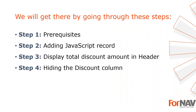To demonstrate how to calculate and use totals in Business Central reports, I am going to use these steps. Step one: prerequisites — what do I need to get going. Step two: we will add a JavaScript record to keep track of the discounted amount. Step three: we are going to display the sum value in the document header. Step four: we will set up the discount column to be hidden when there is no discount on the current invoice. Finally, as a bonus feature, I will condition the layout itself to display differently when a discount is applied.